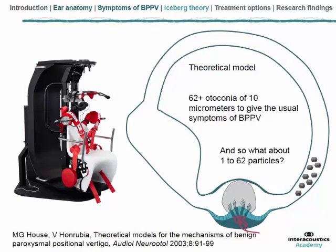Here is a paper I like to present, published in 2003. It is a mathematical model that showed that about 62 otoconia of about 10 µm size were necessary to reproduce the same symptoms as classic posterior BPPV. So the question is: what happens between 1 and 62 particles?